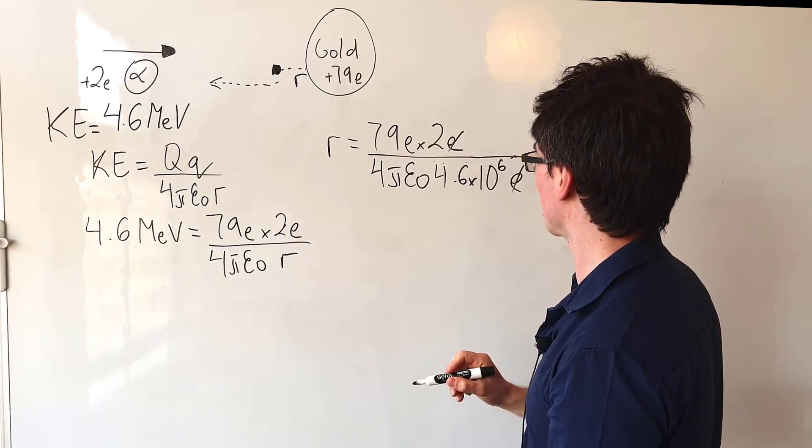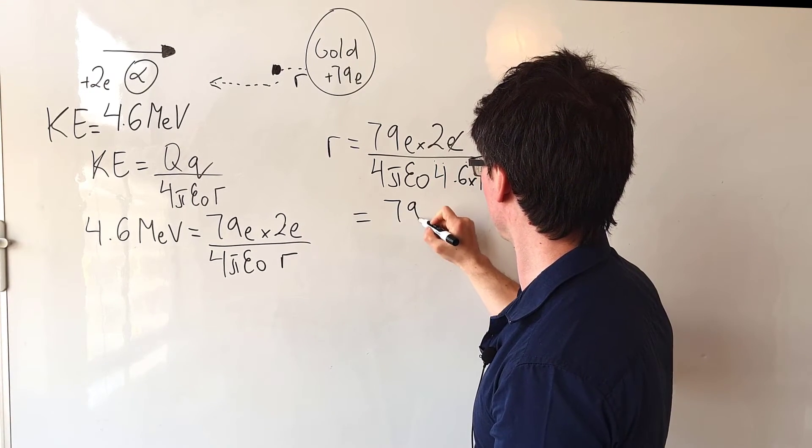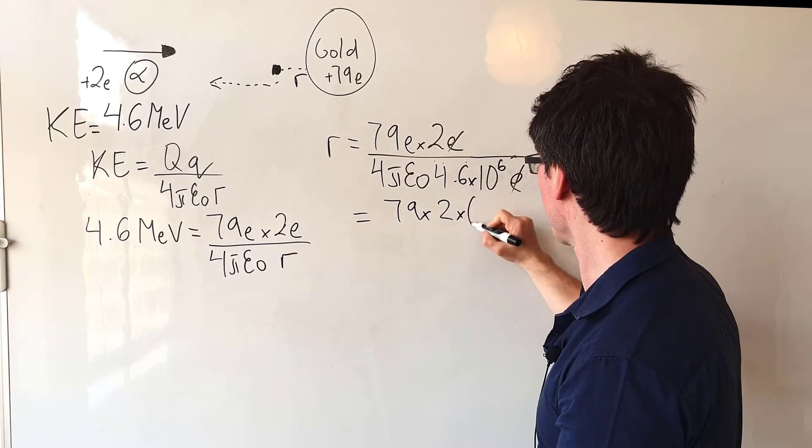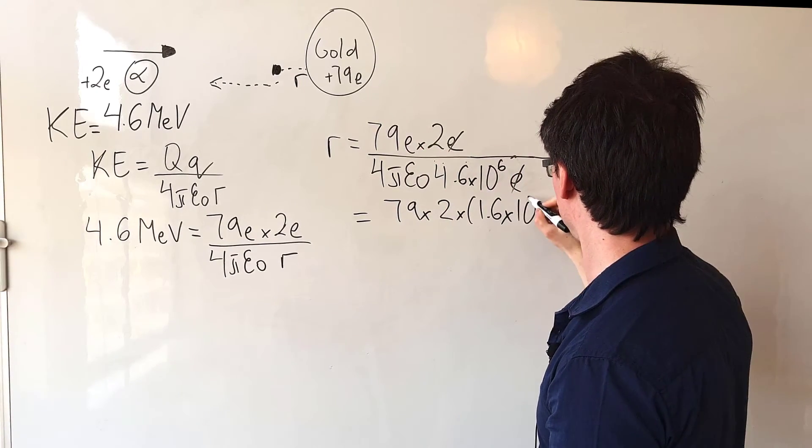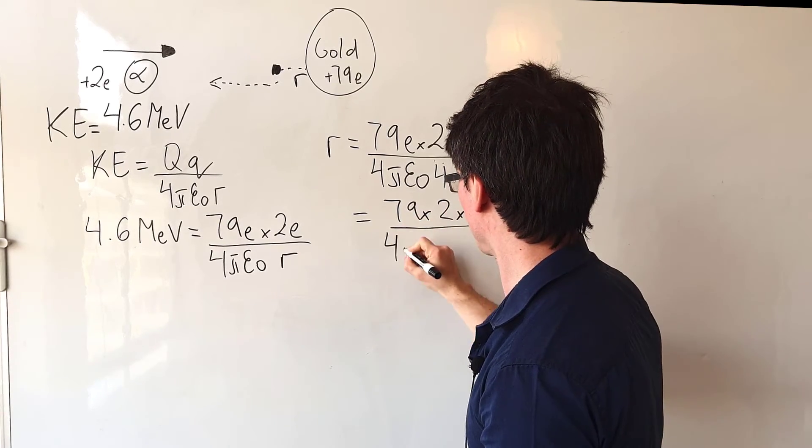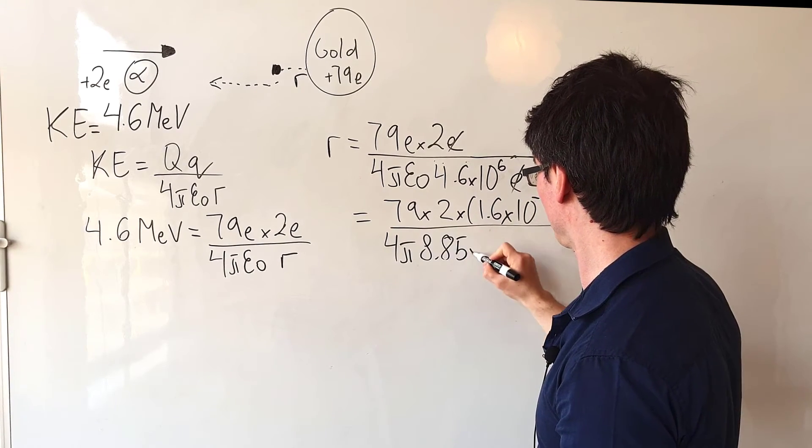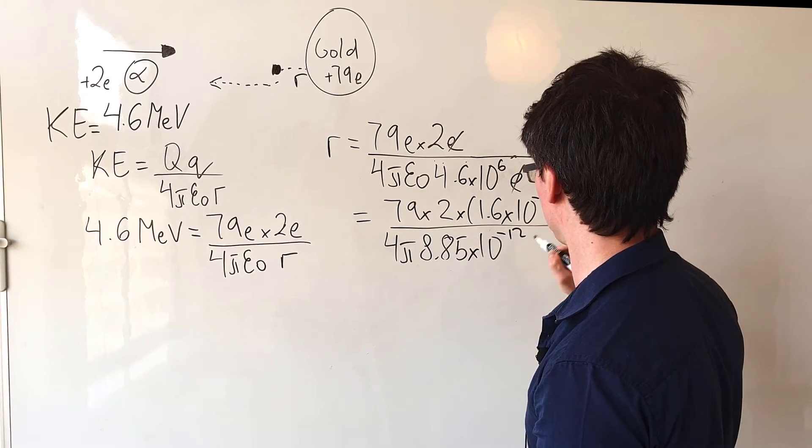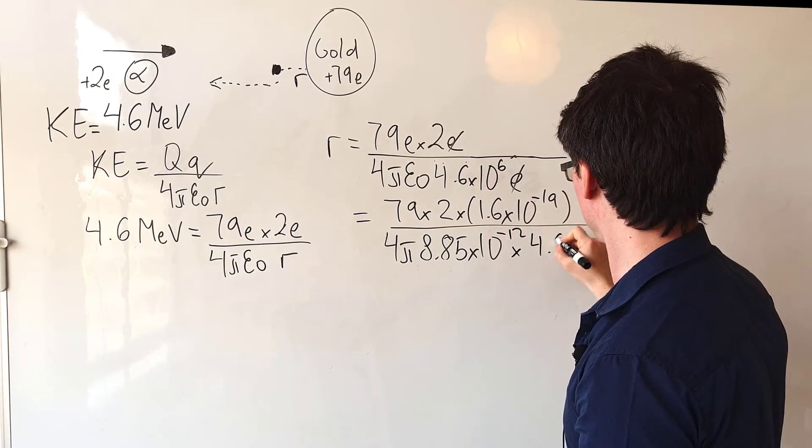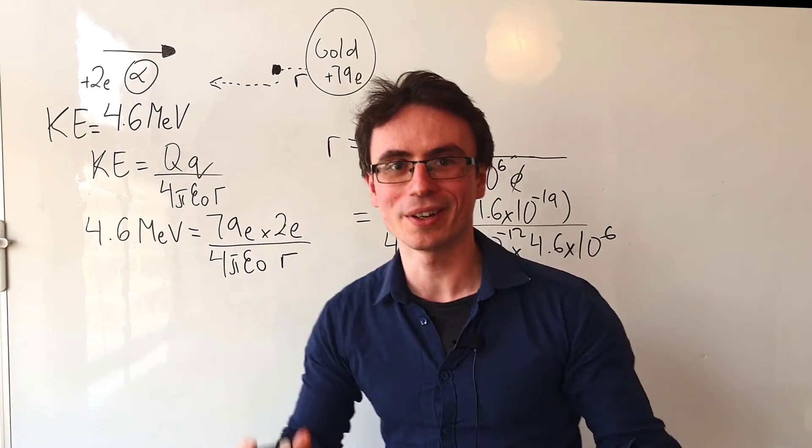Now one of those e's here is going to be cancelled. And what I'm left with is 79 times 2 times the elementary charge, which is just 1.6 times 10 to the power of minus 19 coulombs. I'm going to be dividing that by 4π. The value of epsilon naught is just 8.85 times 10 to the power of minus 12 multiplied by 4.6 times 10 to the power of 6.